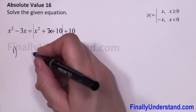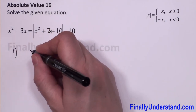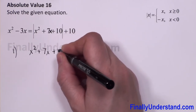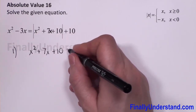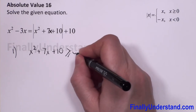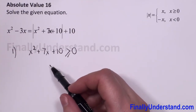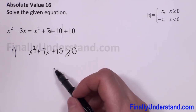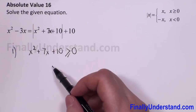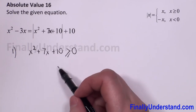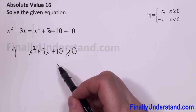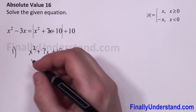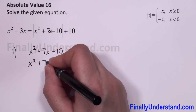For the first case, we have x squared plus 7x plus 10 is greater than or equal to zero. We have to solve a quadratic inequality. To do that, we first find the roots, then draw the graph, and from the graph find the values greater than or equal to zero. So first we solve the quadratic equation equal to zero.